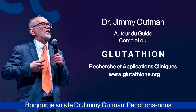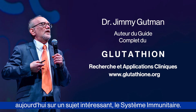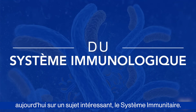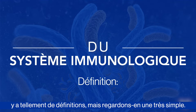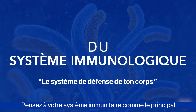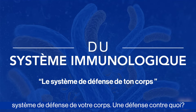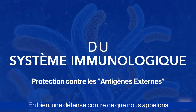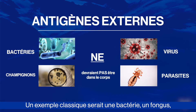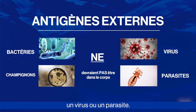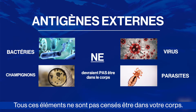Hello, I'm Dr. Jimmy Guttman. Let's look at an interesting topic today: the immune system. There are so many definitions, but let's look at a simple one. Think of your immune system as your body's primary defense system — defense against what we call a foreign antigen. Classic examples would be a bacteria, a fungus, a virus, or a parasite — all of these are not supposed to be in your body.